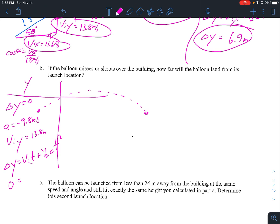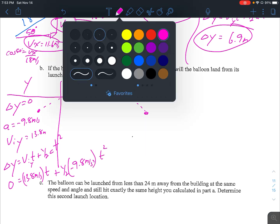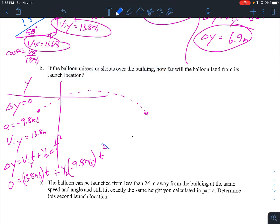So my VIY was the 13.8 T plus my one half, and I apologize for being unorganized. So one of my T's will cancel out in this case, and I can solve for my time.